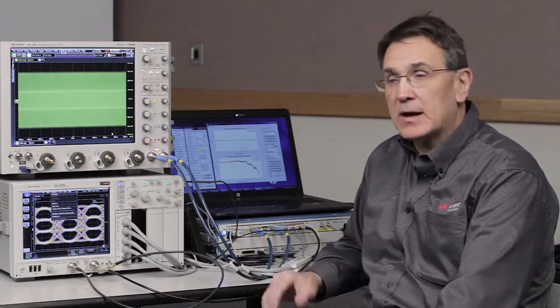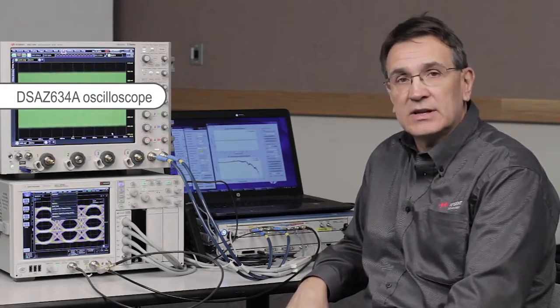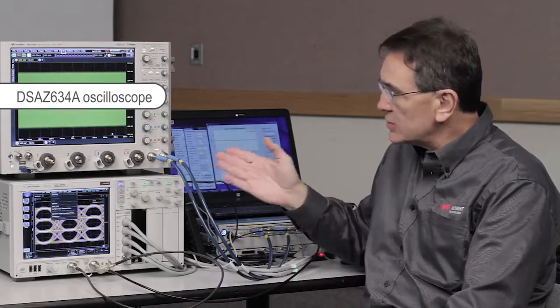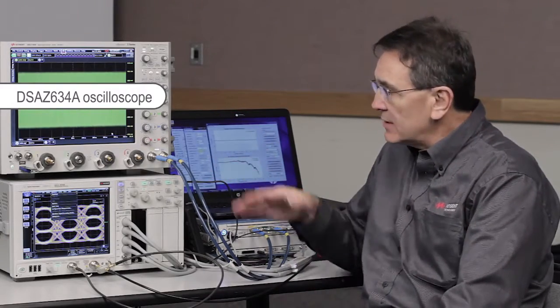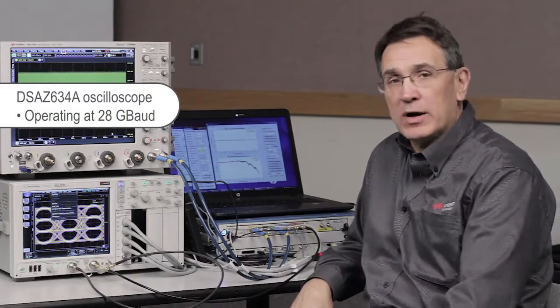So let me talk to you a little bit about our setup here. We have a Keysight Z-Series 63 GHz oscilloscope and we're using our real-edge channels that have full bandwidth out to 63 GHz to receive a signal, a PAM4 signal, that's operating at 28 gigabaud or 28 giga symbols per second.